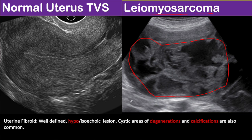Leiomyosarcoma is a malignant tumor of the uterine myometrium. Only less than one percent of uterine fibroids actually undergo malignant transformation. However, leiomyosarcoma can develop de novo without prior history of uterine fibroid. So, if there is a history of uterine fibroid, then cystic degeneration of the fibroid can be our top differential.